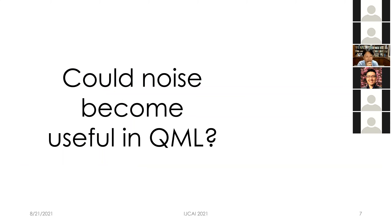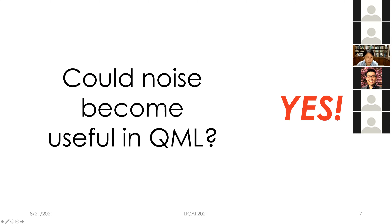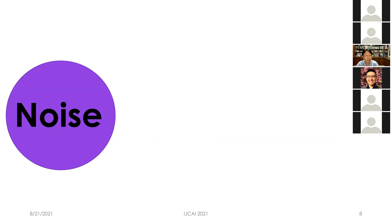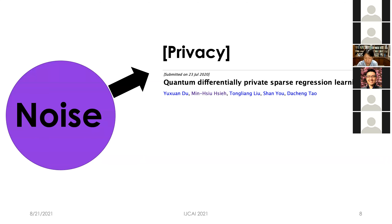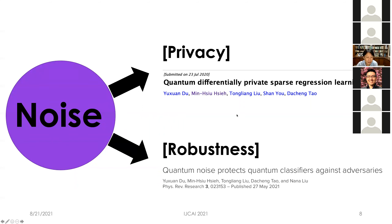As mentioned, quantum circuits are full of noise, and the same holds true for quantum learning machines. Other than designing error mitigation or error correction techniques, one very interesting question is: how could noise become useful in quantum machine learning? We provide examples showing that noise could become useful in tasks of machine learning. Specifically, today I'll show two examples: noise improving privacy, and noise increasing robustness. I'd like to thank my co-supervised student Yusheng Du and collaborators from Shanghai Jiao Tong University for their wonderful work.